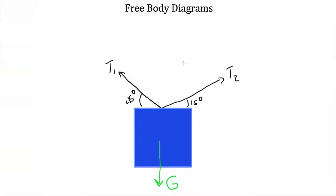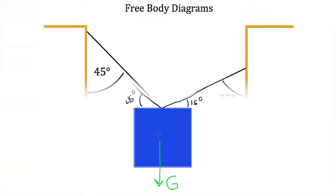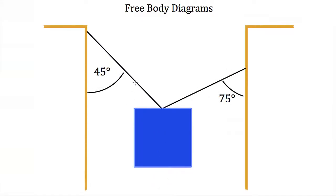There are no other forces acting on this block. I've drawn the block by itself away from its environment and drawn all the forces acting on it as vectors in their proper directions. This is the free body diagram for the block suspended by two strings: tension force one, tension force two, and gravity.